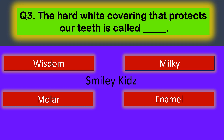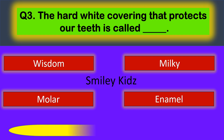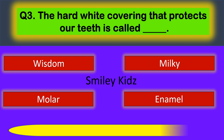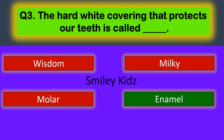Question number three: the hard white covering that protects the teeth is called — your options are: wisdom, milky, molar, and enamel. The correct answer is enamel. The hard white covering that protects our teeth is called enamel.